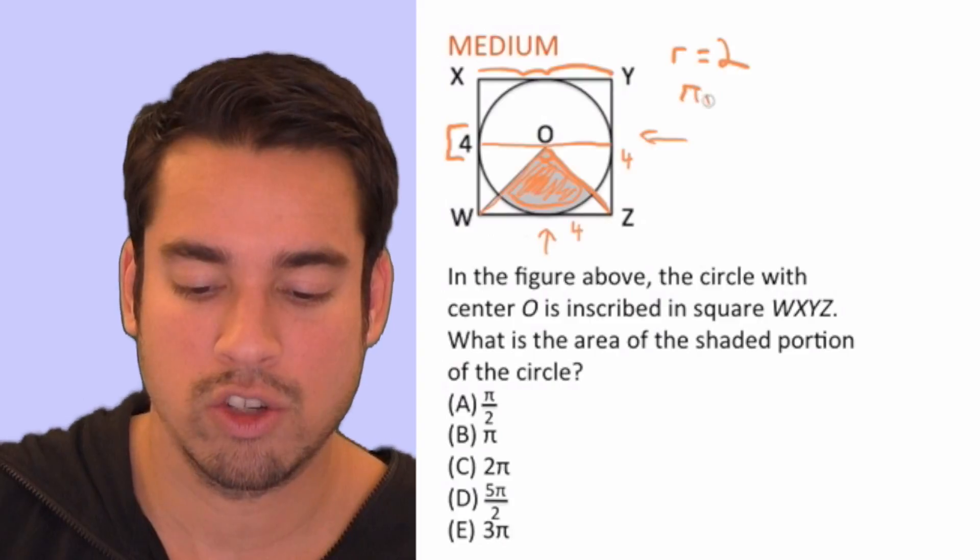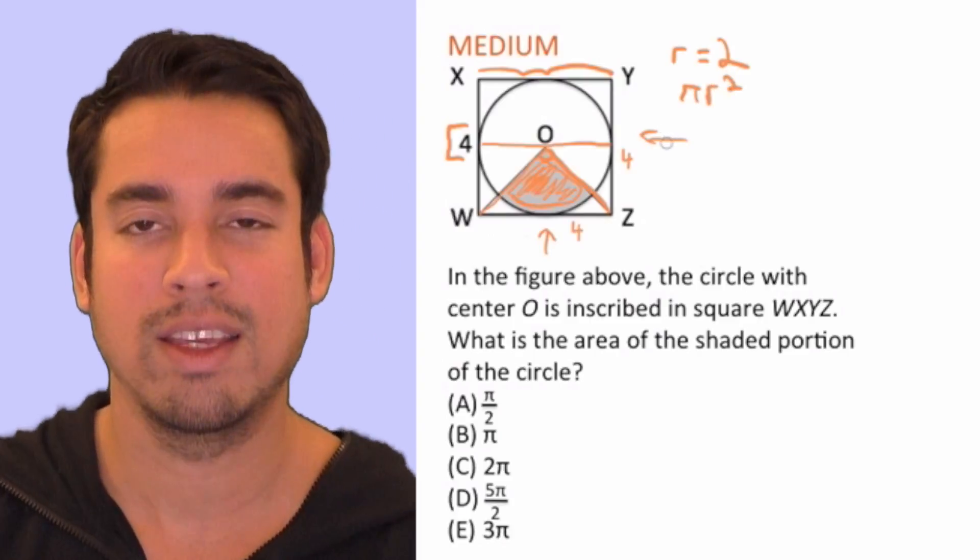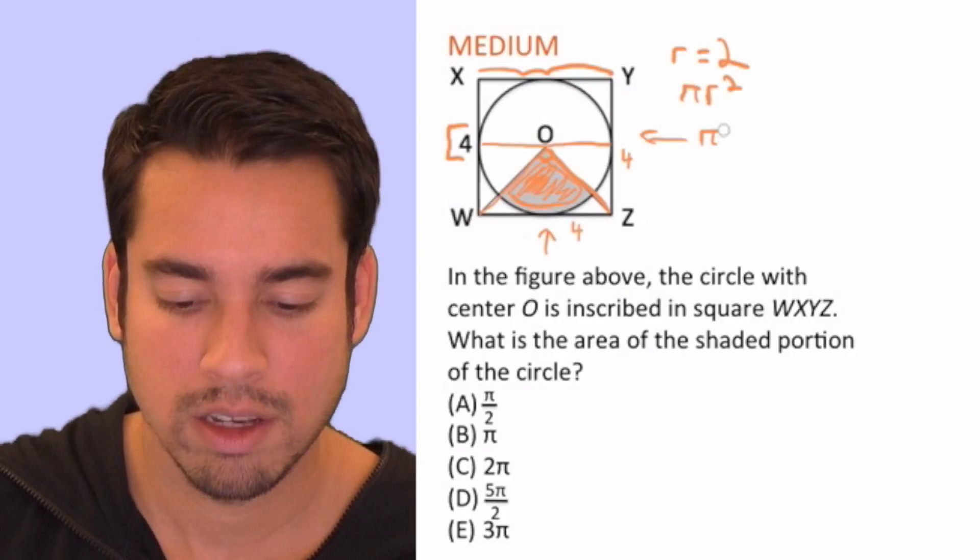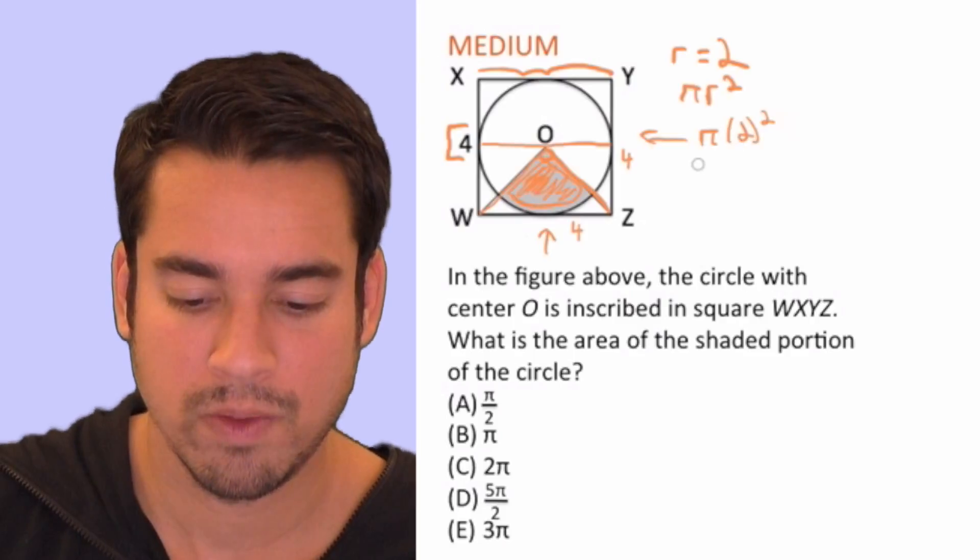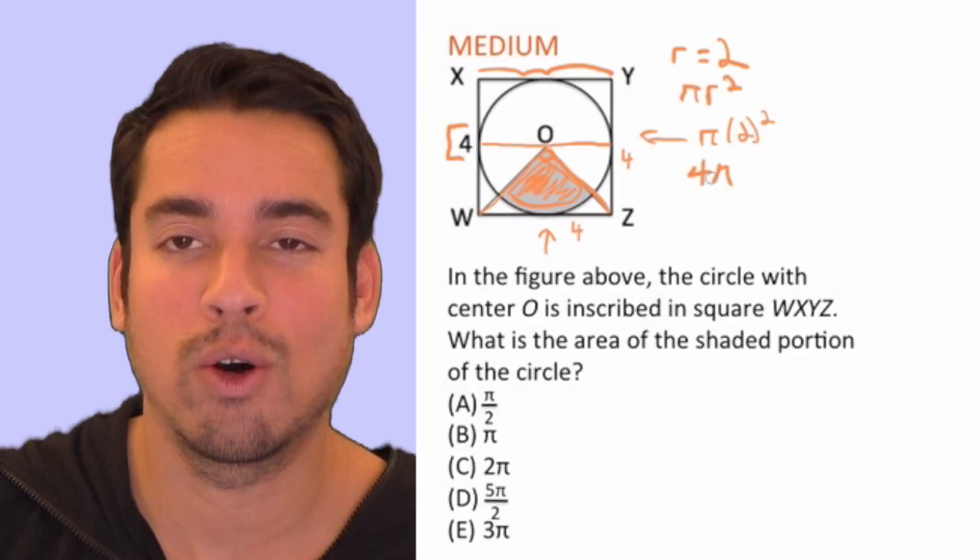Let's use pi r squared now as our formula for calculating the area of a circle. So we have pi times two squared. So the area is simply four pi of the whole circle.